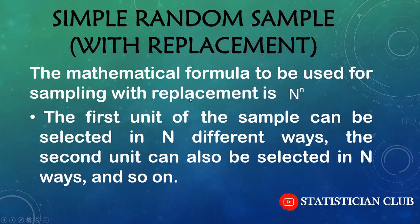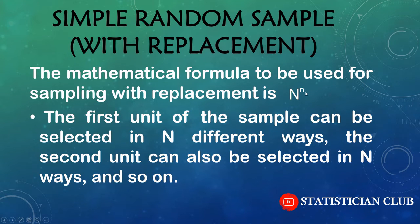The mathematical formula for sampling with replacement is capital N raised to the power small n. Suppose capital N is 5 and sample size n is 2. Then we make 5 power 2 equals 25 samples to perform sampling with replacement.